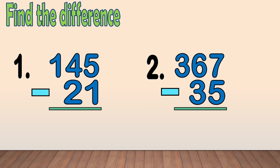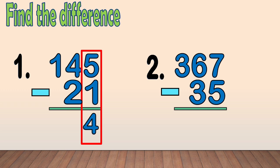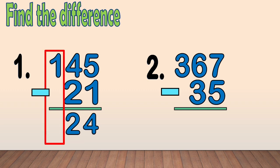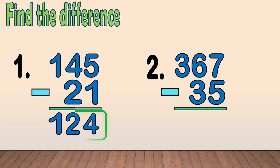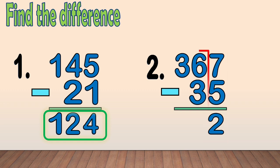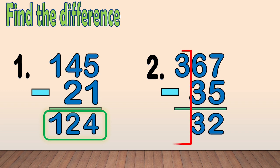Let's answer this. Find the difference. Number one: one hundred forty-five minus twenty-one. First, we subtract the ones. Five minus one equals four. Next, we subtract the tens. Four minus two equals two. Then, we bring down the hundreds digit, one. Our final answer is one hundred twenty-four. Number two: three hundred sixty-seven minus thirty-five. First, we subtract the ones. Seven minus five equals two. Next, we subtract the tens. Six minus three equals three. Then, we bring down the hundreds digit, three. Our final answer is three hundred thirty-two.